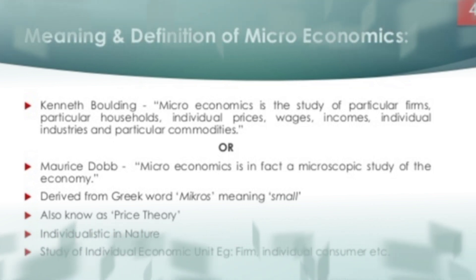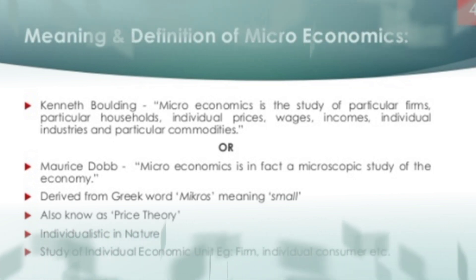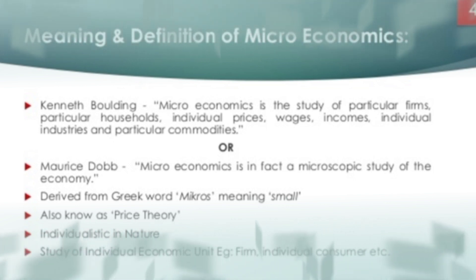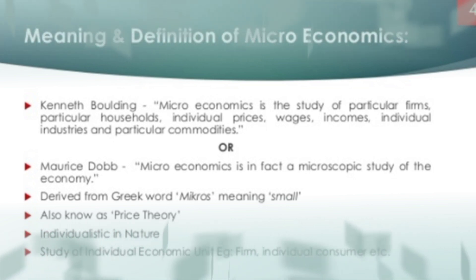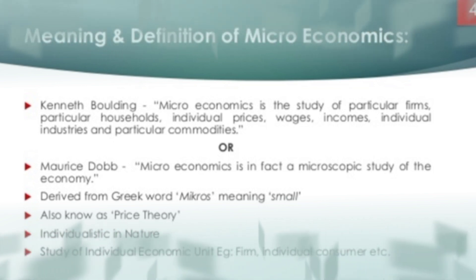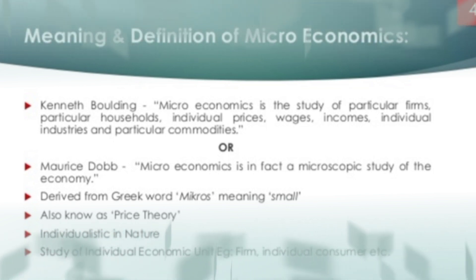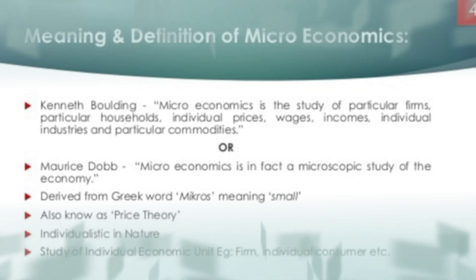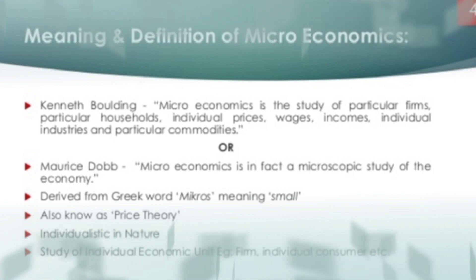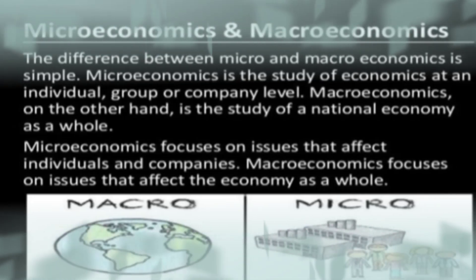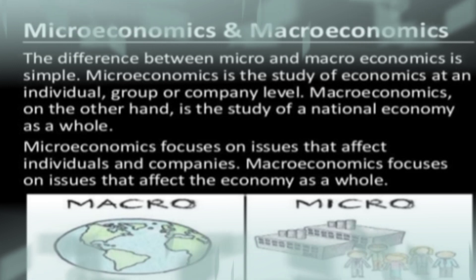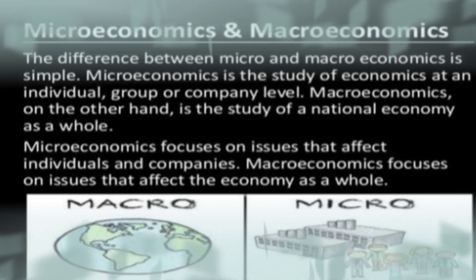Microeconomics deals with price theory. Price theory refers to product pricing. Microeconomics studies individual units in detail — for example, an individual consumer or individual firm — and deals with small, individual units by nature.